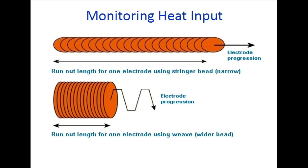There are two types of weld beads: stringer bead and weave bead. The stringer bead is narrow - the weld bead will not be wider and the run-out length is straight. The weave bead is wider because the electrode is weaved. Stringer bead is narrow; weave bead is wider.